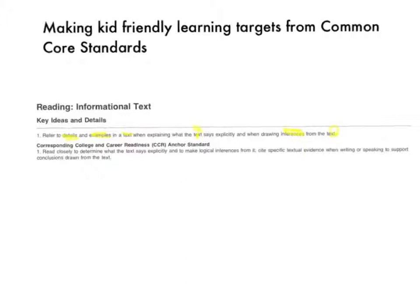We can take the nouns and some of the verbs in the sentence and come up with a different way to say the same thing, but to try to say it in a way that kids will understand. So we want kids to refer, we want kids to explain, we want kids to be explicit, and we want them drawing those inferences. So let's take our nouns and our verbs and come up with another way to say the same thing, but in a way that kids might understand.